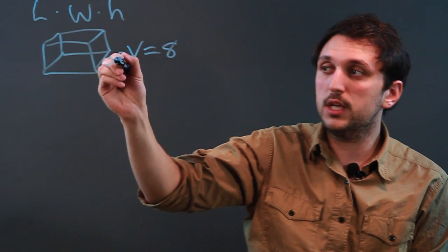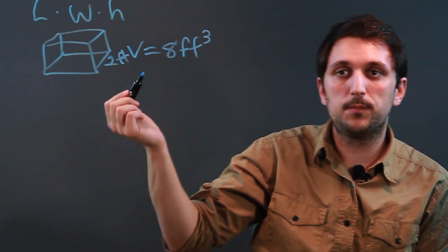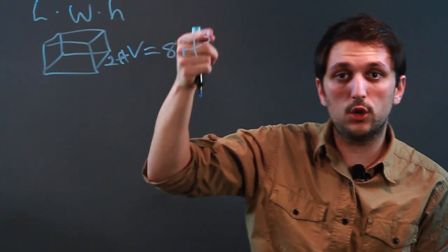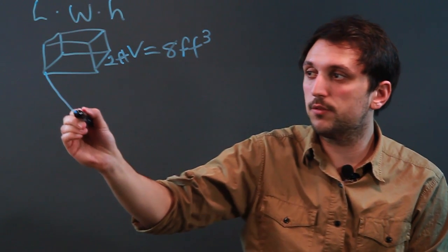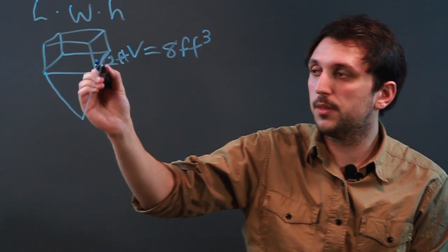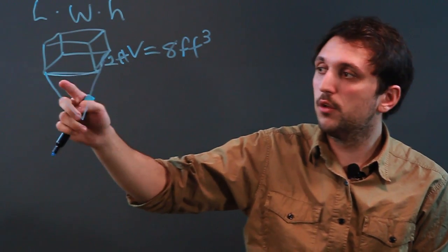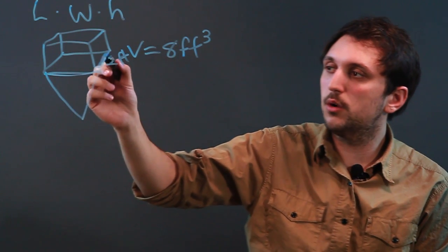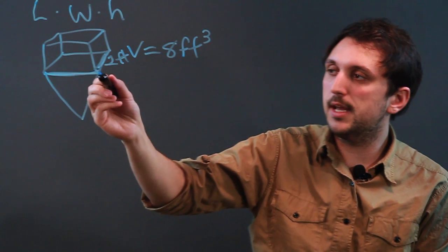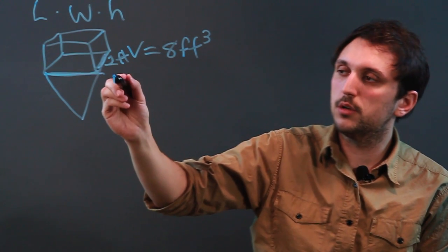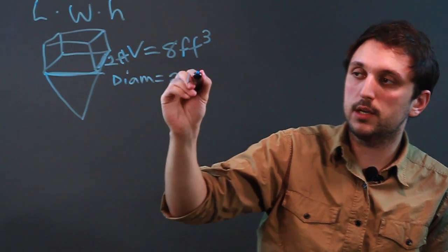And let's say it's 2 feet, so we're going to say 8 feet cubed, or 8 cubic feet. Now if we have a cone put together with this, let's say the cone is down here, and it has a circular base. So let's say the cone is attached, and the cone has a diameter of 2 feet.